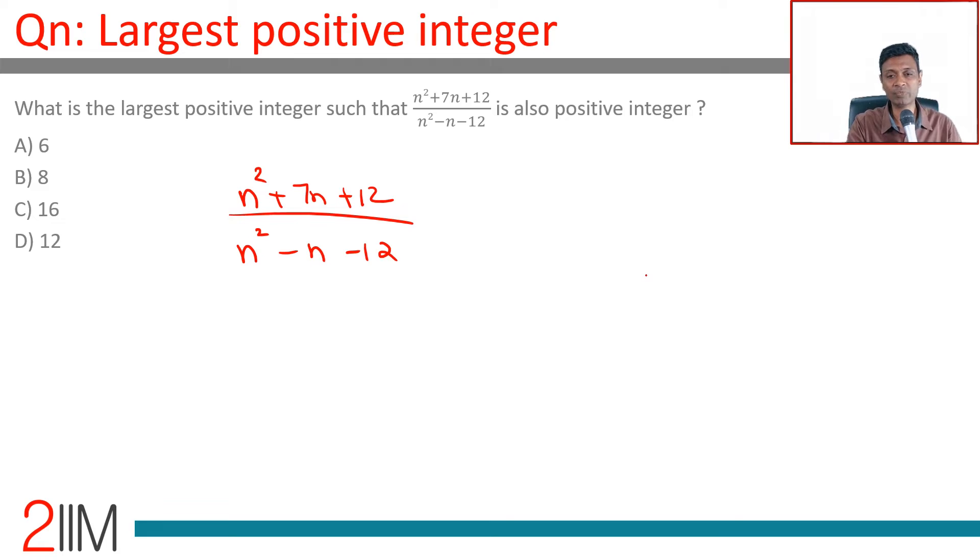Anytime you have a quadratic by a quadratic, don't deal with two quadratics, deal with one. How so? Call this as n square minus n minus 12 plus some adjustment term divided by n square minus n minus 12.